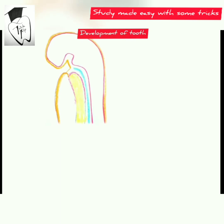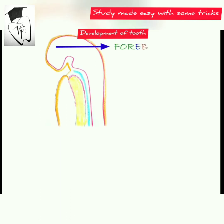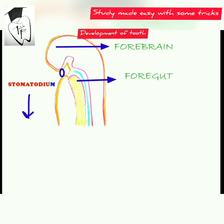During embryo development, there is a developing phase and oral cavity. If we take a picture of the developing embryo, this is the forebrain and this is the foregut, and here is the stomodeum. The stomodeum is also called the primitive oral cavity, which is still developing and is lined by stratified squamous epithelium, also called the oral ectoderm or primitive oral epithelium, which is two to three cell layers thick.